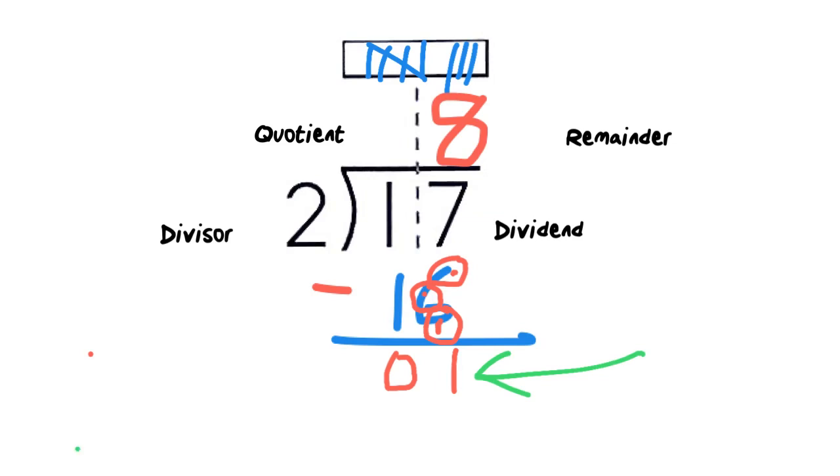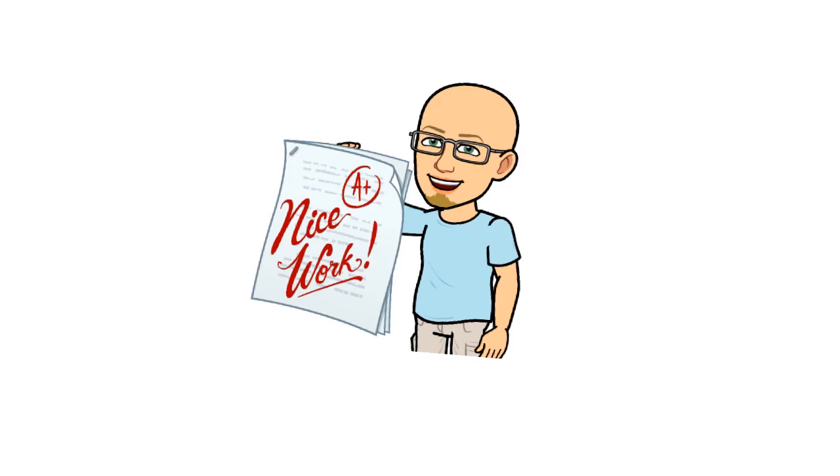So now we take the 1 at the bottom and we're going to write R1. So that's our answer. 2 goes into 17 eight times with a remainder of 1. Nice work. We'll see you next time. Bye-bye.